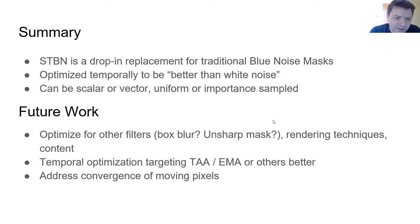As far as future work goes, it would be interesting to try to optimize this for other filters. Because the blue noise is essentially optimized for a Gaussian low-pass filter spatially. So what if we optimized this for a box blur? What would that look like?